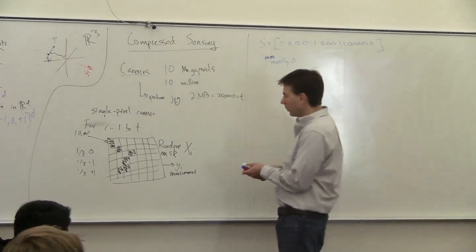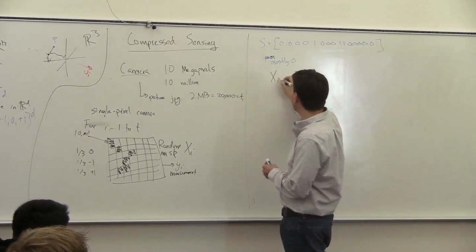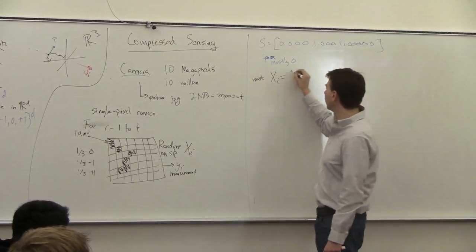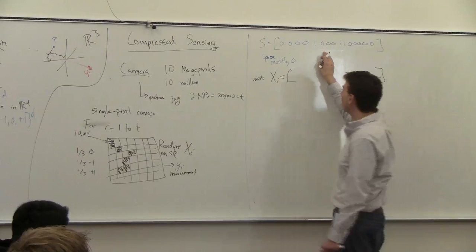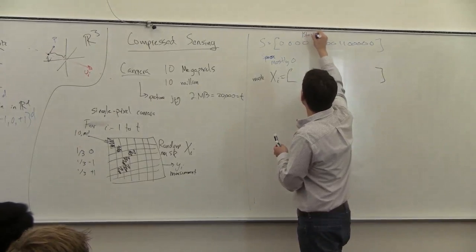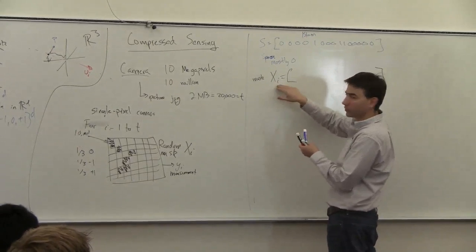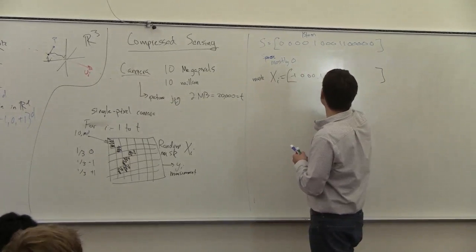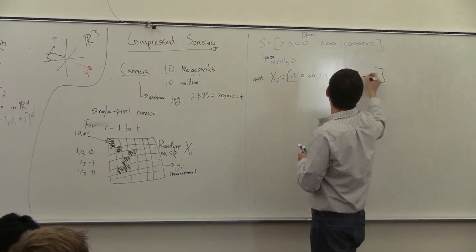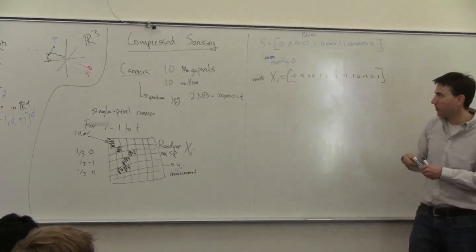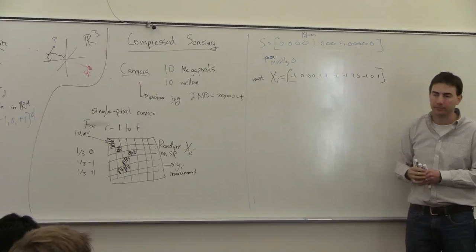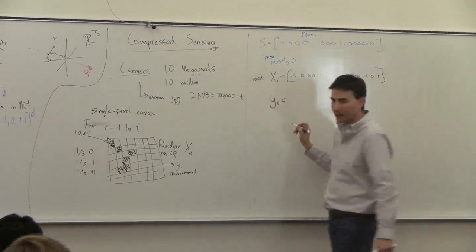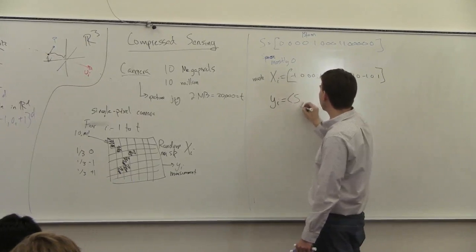This measurement mask Xi is going to be a random vector of the same length as S. The size of S will be M, and X will also be length M. X will be filled with minus one, zero, or plus one at random for every coordinate. Then I'm going to output the actual measurement Yi, which is going to be the dot product of S and Xi.